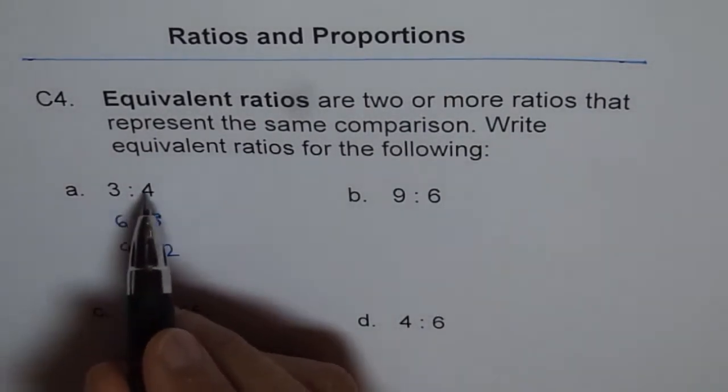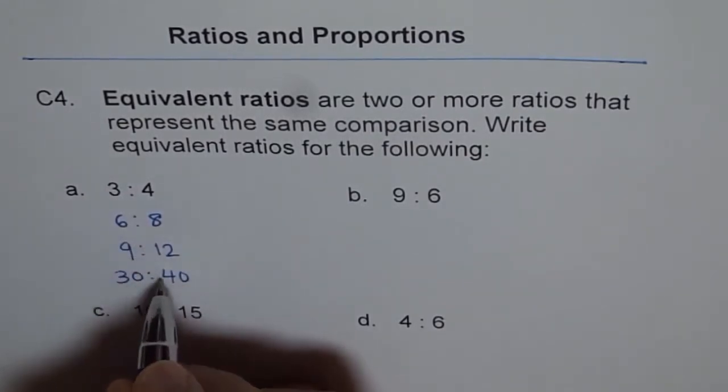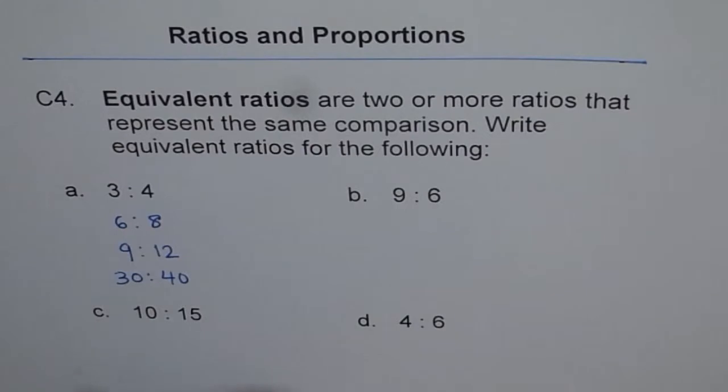We can multiply by 10 and then we get 30 is to 40. All these are equivalent ratios. All of them are the same ratios.